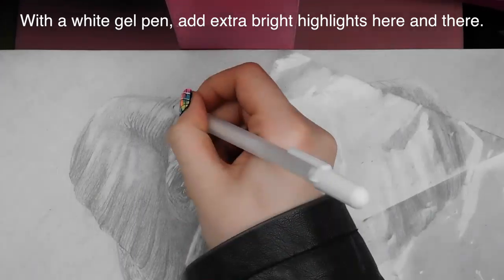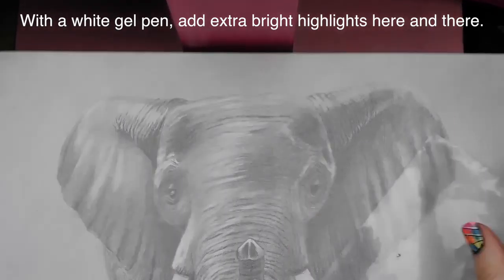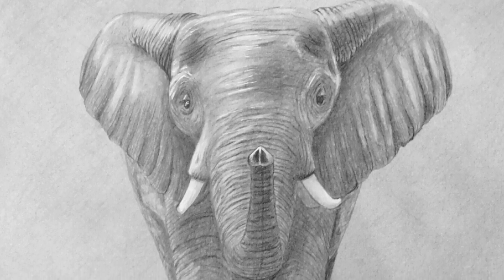In the areas that really need brightening, like his tusks, around his eye, and on the one ear that's got more sun hitting it, I'm going to take a gel pen and further highlight those areas with little lines.